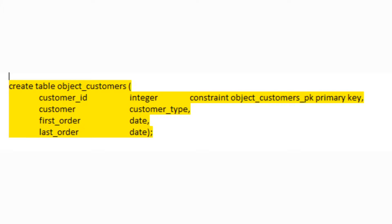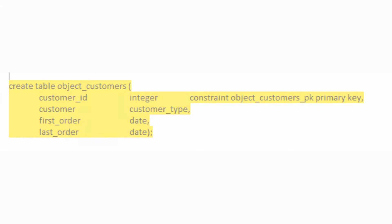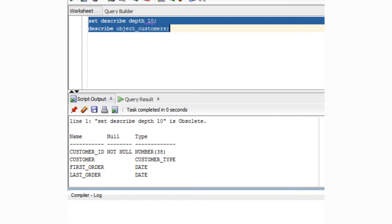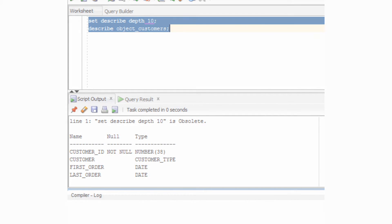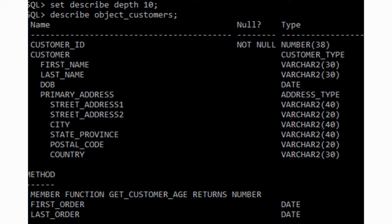Now let's add another level of complexity — let's use this customer object as a component of a greater object-based customer table. The syntax is real simple; we're just nesting our user-defined types a little deeper. Our table contains a customer_type, which in turn contains an address_type. I want to do a DESCRIBE on this table to see the hierarchy of nested objects. Apparently SQL Developer has a little bug, because SET DESCRIBE DEPTH 10 is almost certainly not obsolete. Here's the exact same syntax in SQL*Plus, and it's working just fine.